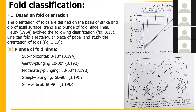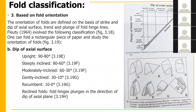For the axial surface dip on the right side of the chart: recumbent is 0–10 degrees dip of axial surface; gently inclined is 10–30 degrees; moderately inclined is 30–60 degrees; steeply inclined is 60–80 degrees; and upright is 80–90 degrees.